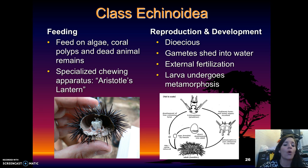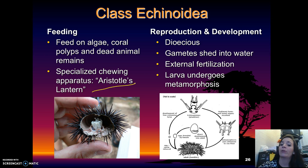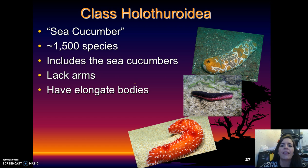In terms of feeding, they feed on algae, coral polyps, and dead animal remains, and they have a specialized chewing apparatus known as Aristotle's lantern. For reproduction and development, they are dioecious and shed their gametes into the water, resulting in external fertilization. Their larvae undergo metamorphosis.